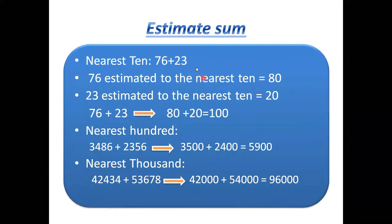To estimate a sum to the nearest 10: 76 — ones digit is 6, which is more than 5, so it rounds to 80. 23 — ones digit is 3, less than 5, so it rounds to 20. 80 plus 20 equals 100. That is the estimated sum to the nearest 10.